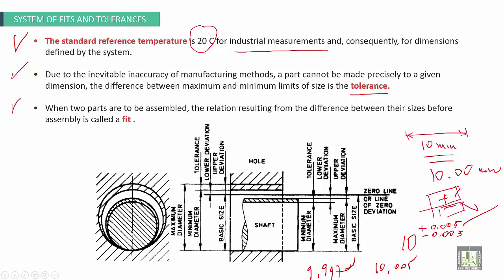When two parts are to be assembled, the relation resulting from the difference between their sizes before assembly is called Fit. The difference between measurements in the first and second part assembly is called Fit, and there are three types we'll cover later.